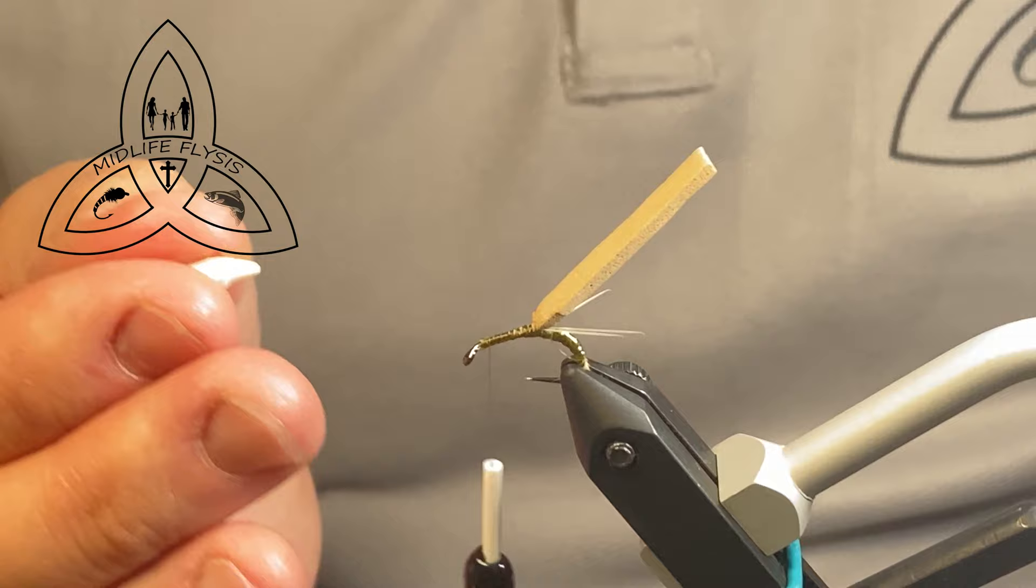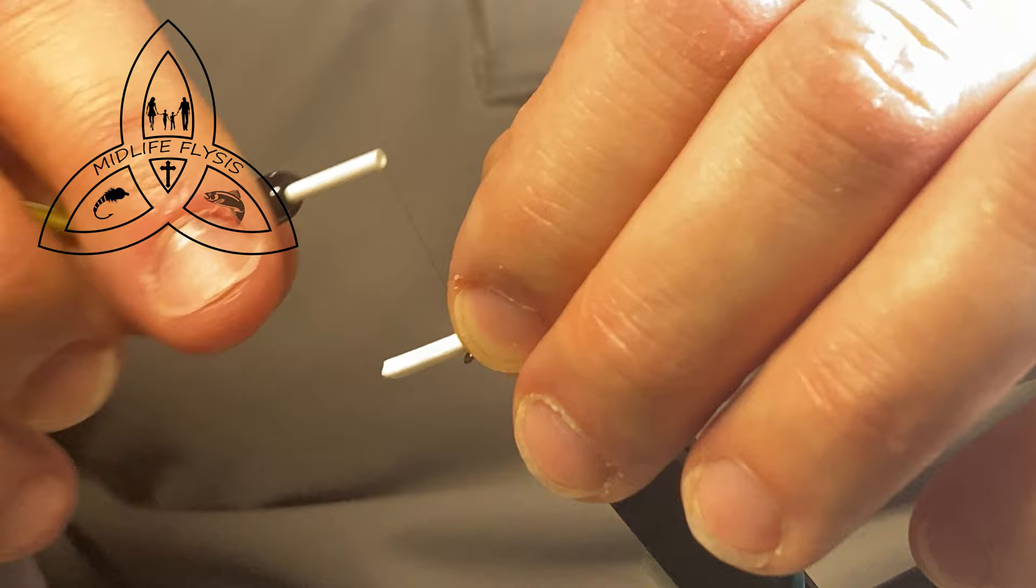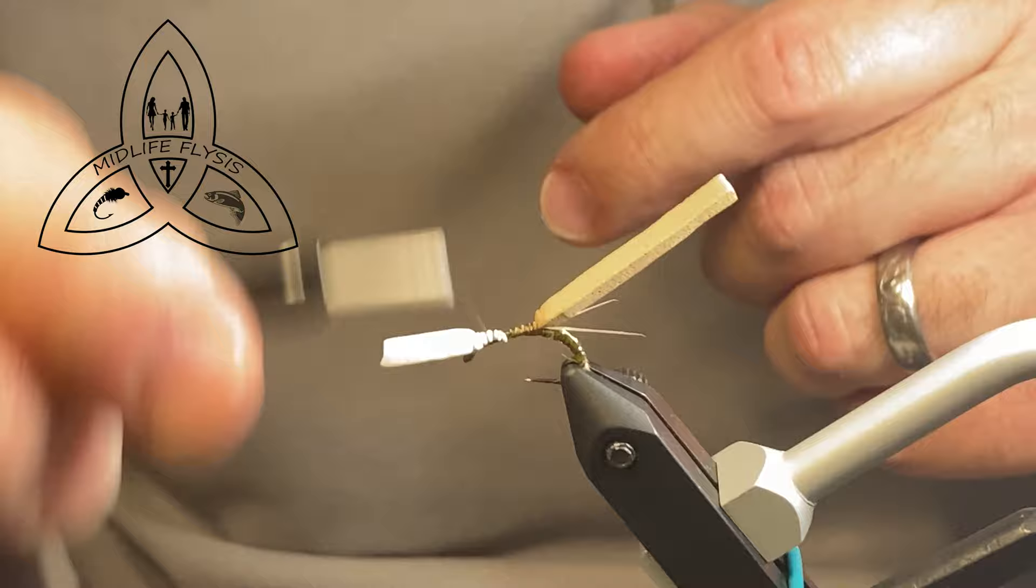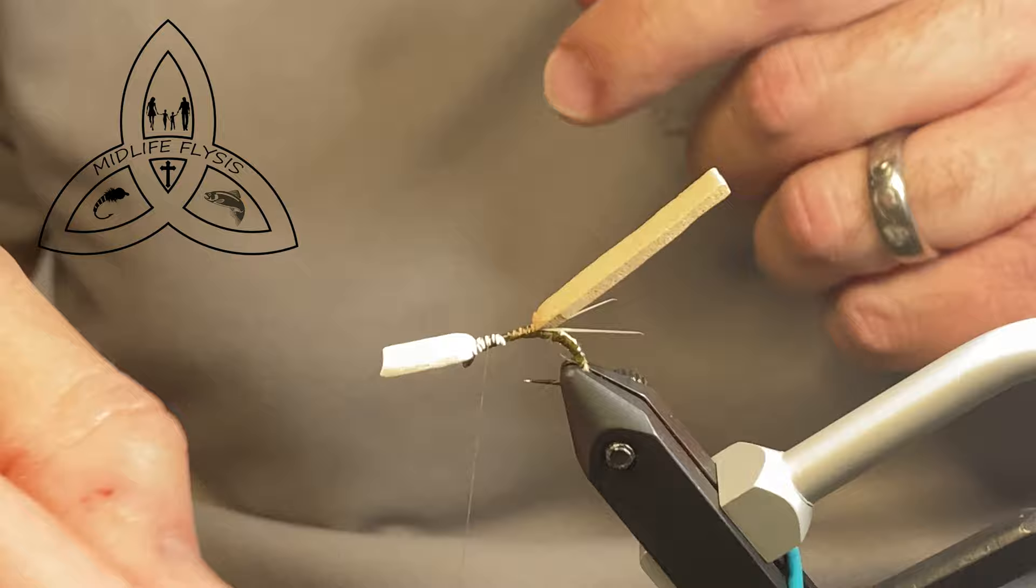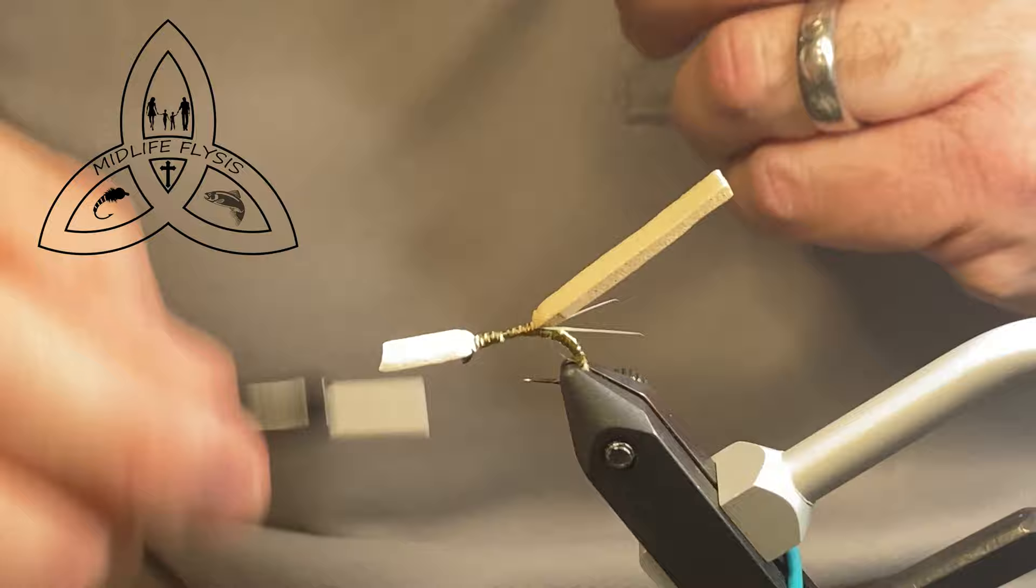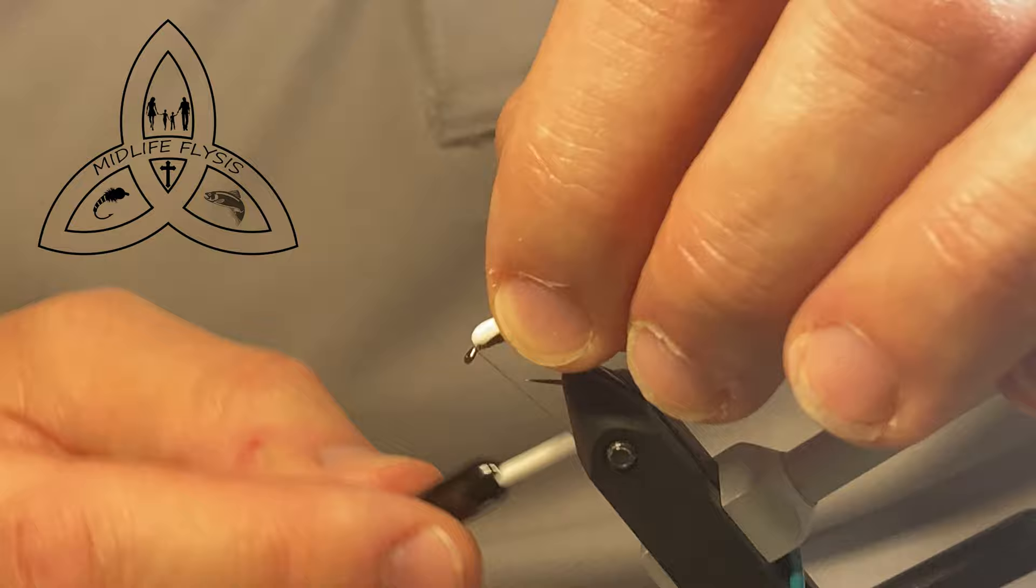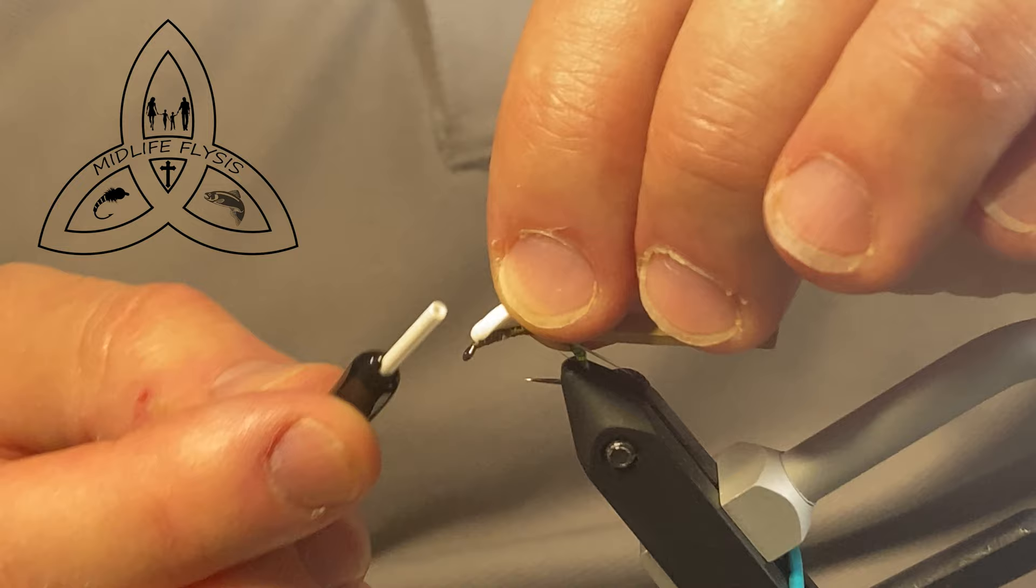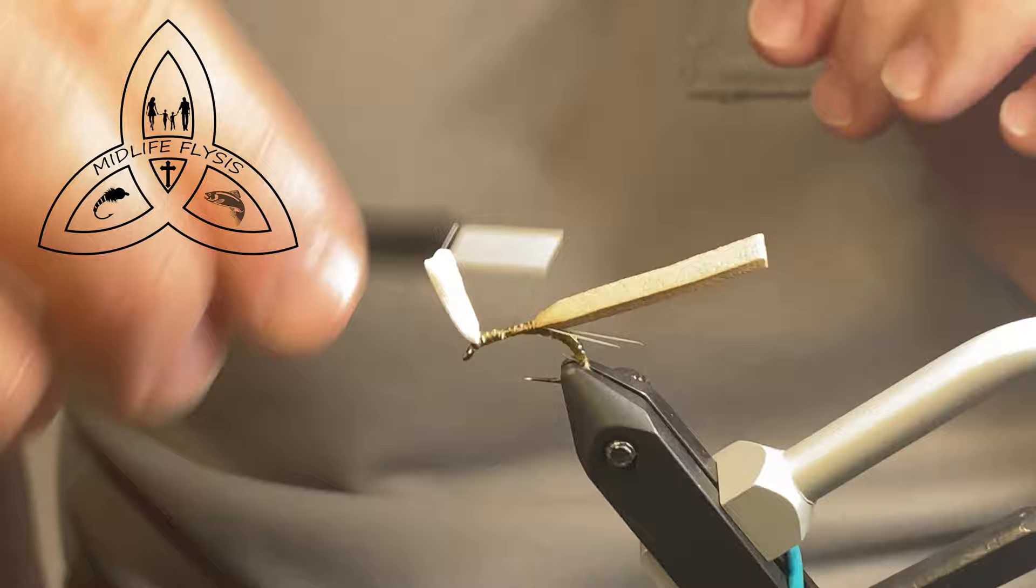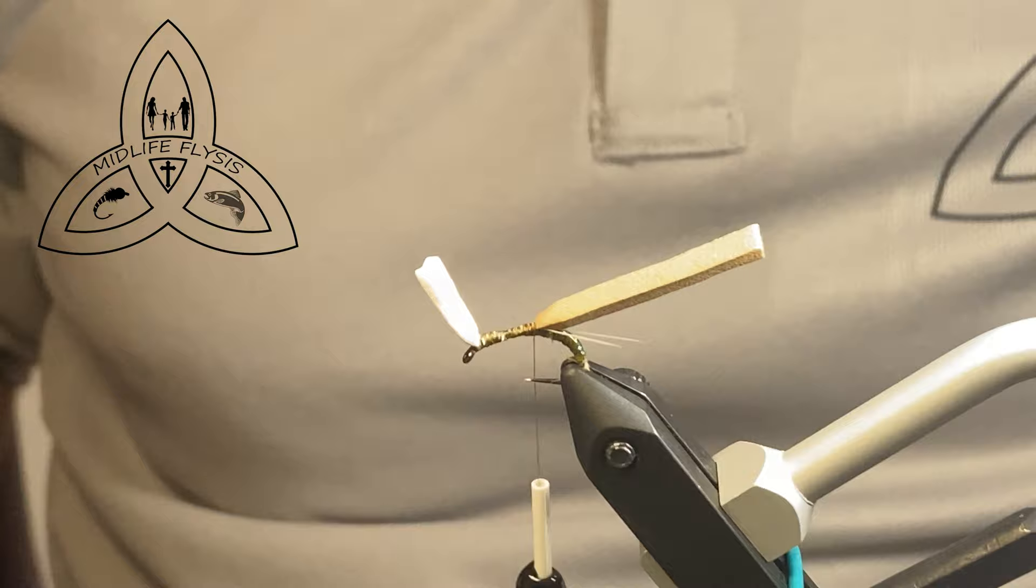So now we're going up towards the eye here. And we're going to tie in that piece of foam there for the parachute post. I use foam for my parachute posts rather than like Antron yarn. I used to use that, but I just find the foam is better. So there I got a little bit heavy on one side, but I think it'll be okay here because most of it is directly on the top. And then we'll go up ahead here and make a little thread dam just to get that to stand up for us.